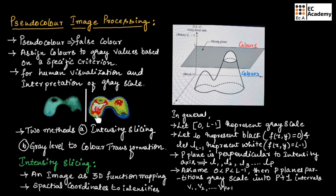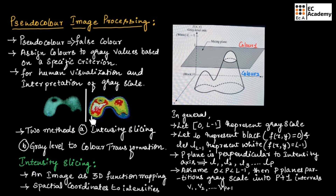This is an example of pseudocolor image processing. On the left side, we have an image. For this image, we are performing pseudocolor image processing and assigning different colors so that it is easy for visualization as well as interpretation of the images.